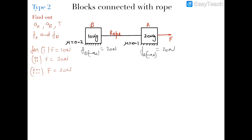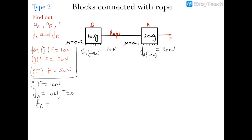Case 1: F equals 10 newtons. Since F_A max is capable of balancing up to 20 newtons, it can easily balance 10 newtons, so F_A will act as 10 newtons. Since friction of block A alone balances F, no force is transferred to the rope, so tension in the rope will be 0. Since the rope is not pulling block B, the friction on block B will also be 0.